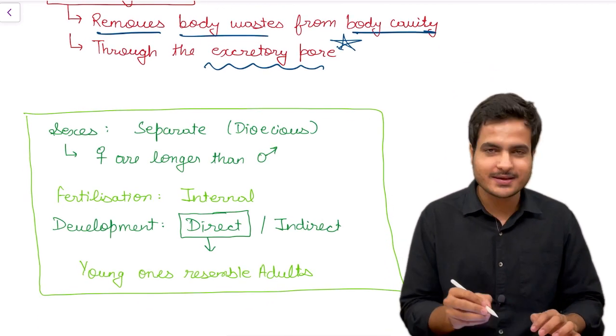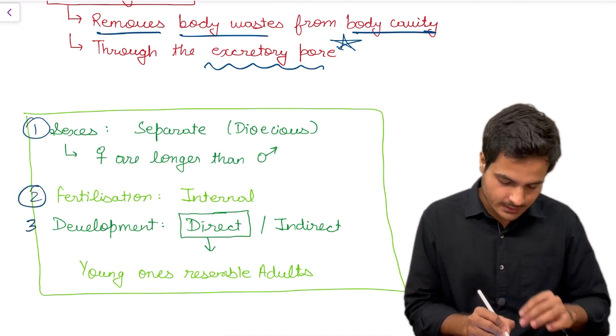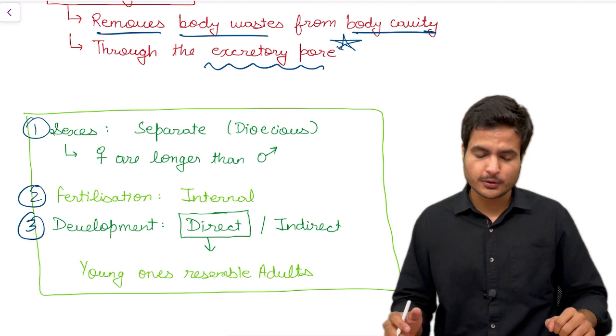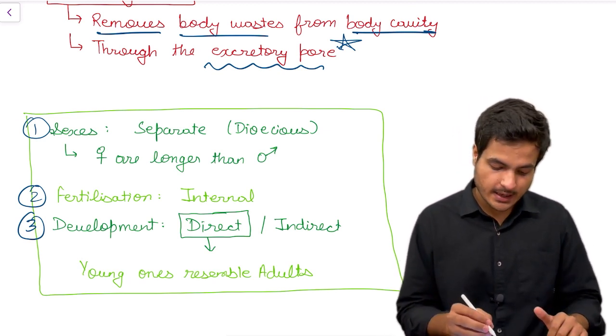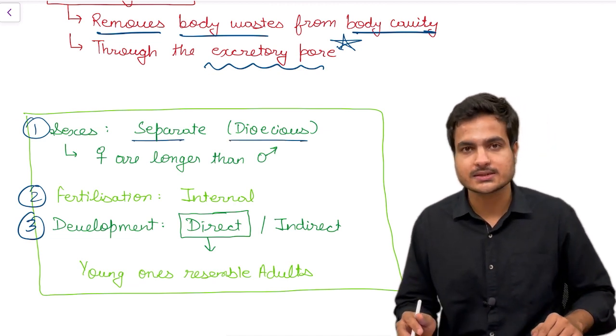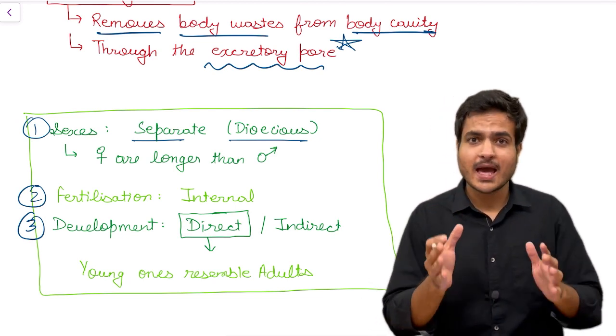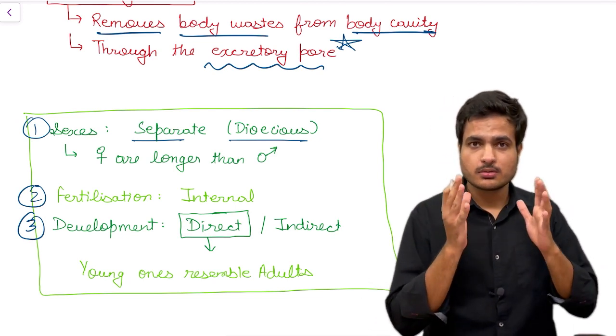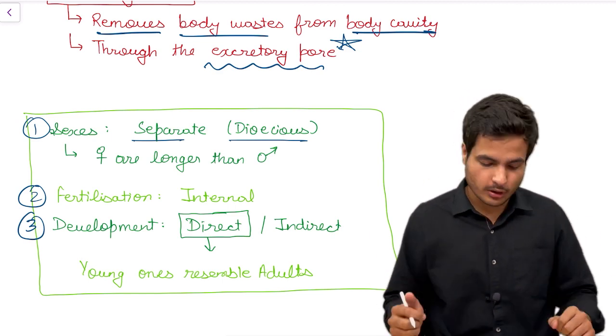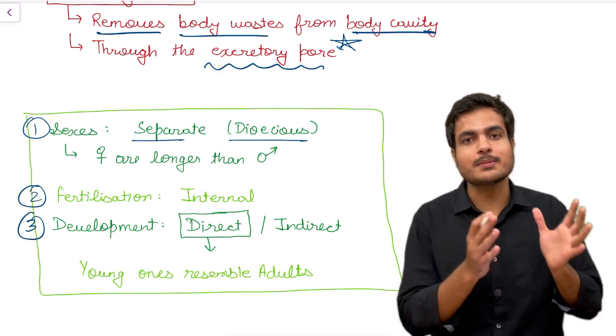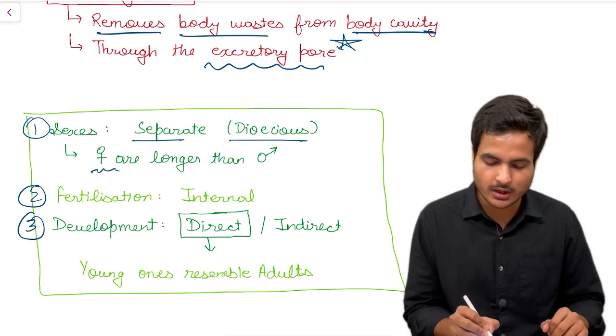Now let's talk about reproduction. Again, reproduction has not been taken care of in detail. Let's talk about the sexes. Here we have separate or dioecious organization. The last two phylums which we have discussed had monoecious organization, that means both sex organs were present on the same animal body. But here we have dioecious, that is two separate bodies for male and female gender and here females are longer than males.